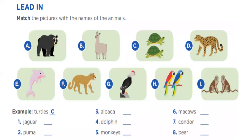Let's continue. Leading: match the pictures with the names of the animals. Letters A through I. Vamos a colocar a cada animal qué letra le corresponde. For example, turtles - what letter is turtle? Letter C. Number one: jaguar - what letter is jaguar?